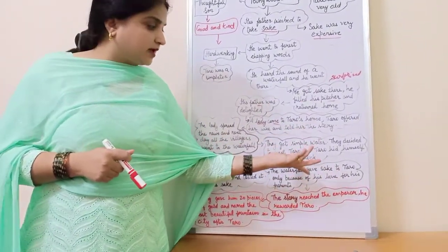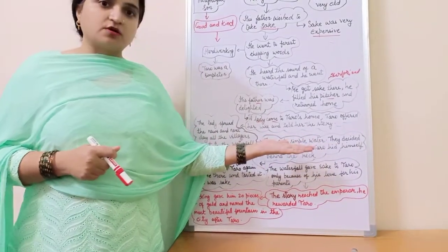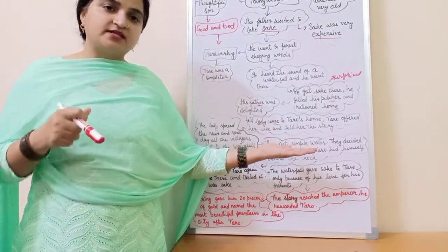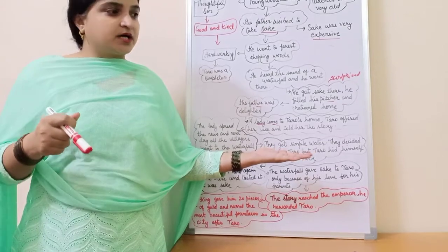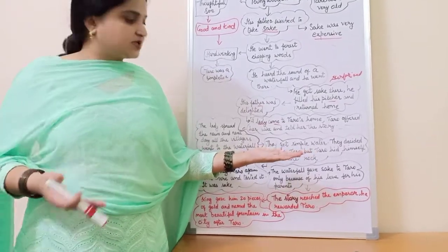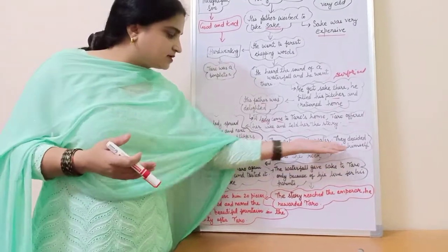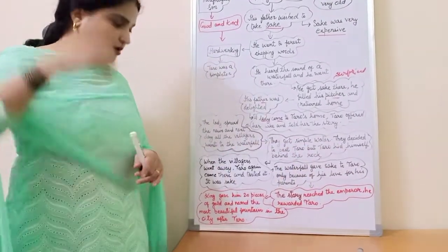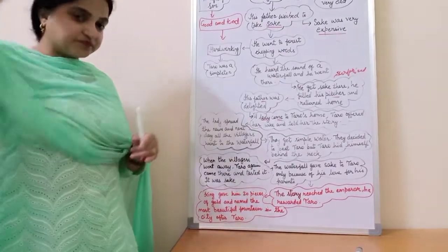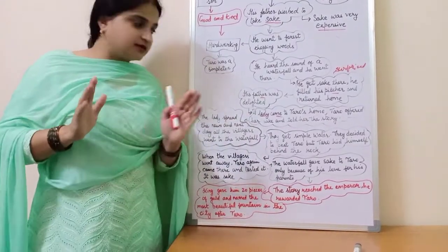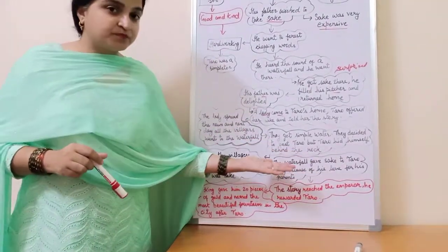And when they went there, they just got simple water. They got simple water there. So what they thought? They thought that Taro had deceived them. Deceived means unko jaise dhokha mila hai. They just came to know, they thought that Taro deceived them. And they decided to beat Taro. But Taro came to know about their plan and he hid himself behind the rock. And when all the villagers went away, he again came out from behind the rock.